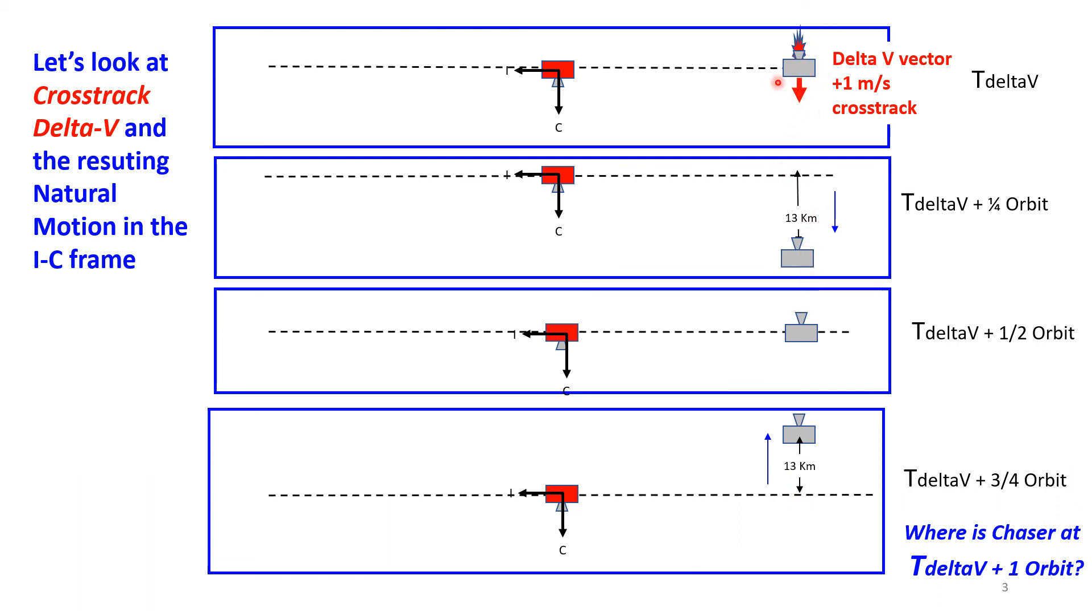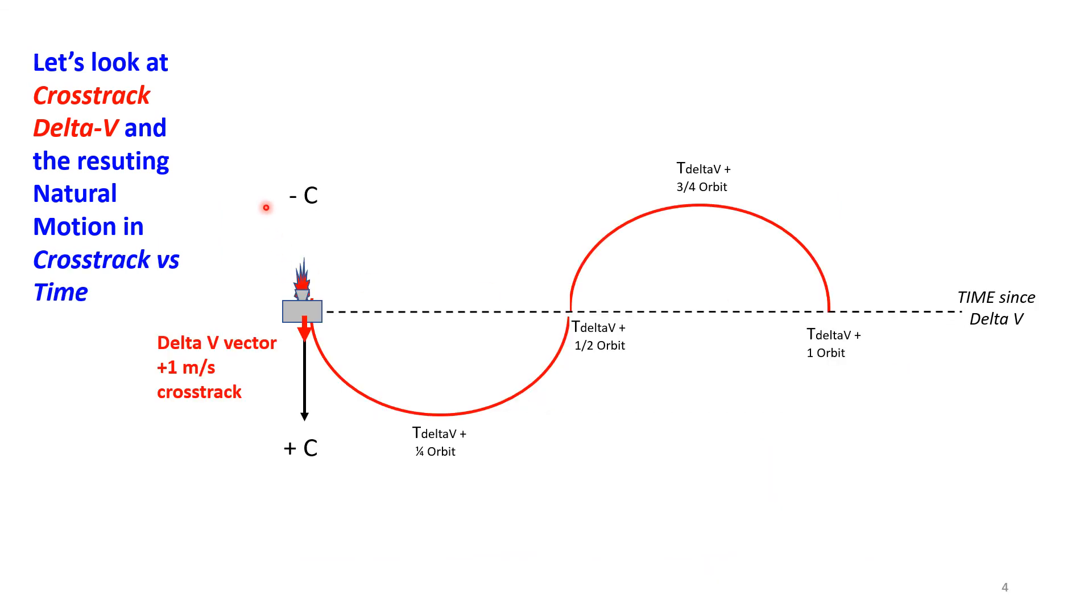Let's look at this in a sense of a timeline. This frame is a little different—not a RIC frame, but it illustrates positive C down and negative C up. We're here at time since delta-v: quarter orbit, half orbit, three-quarter orbit, one orbit—six hours, 12 hours, 18 hours, 24 hours. I'm going to do a positive one meter per second cross-track. We fire the engine. You got this delta-v vector.